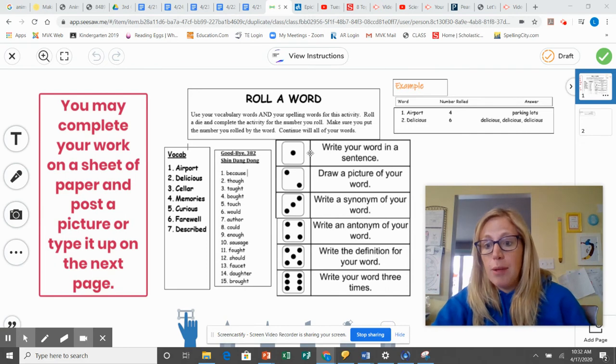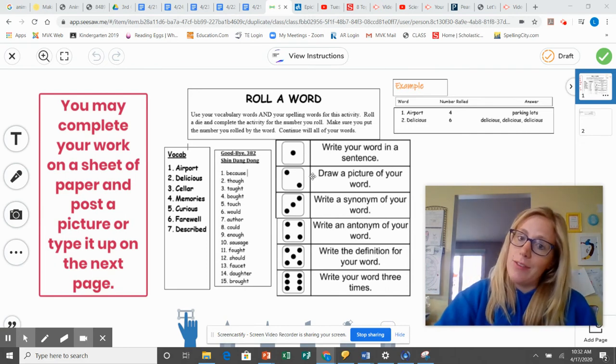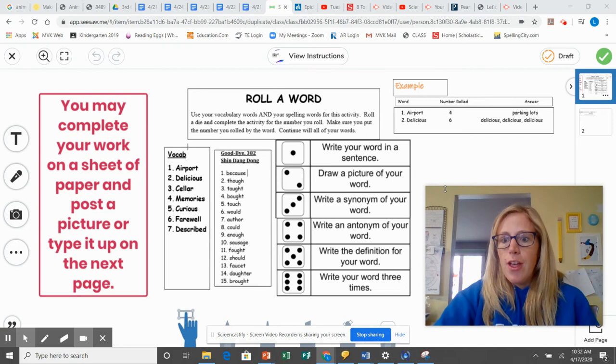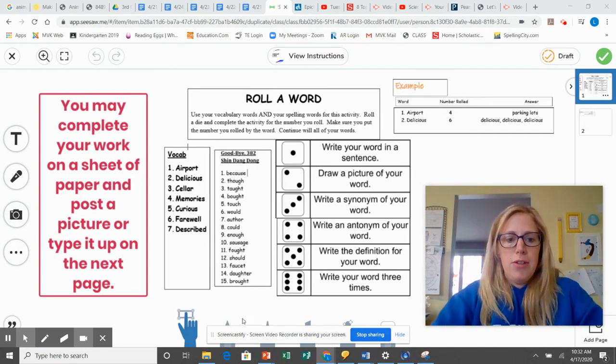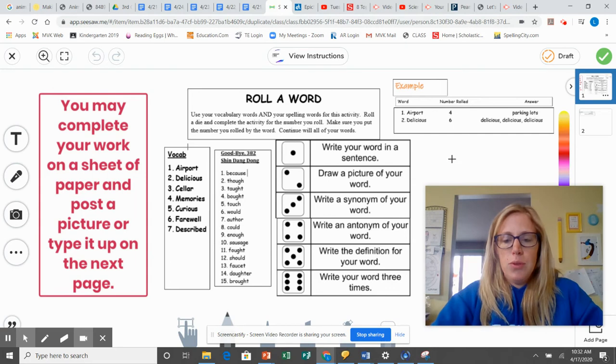You can, if you roll number one, you write it in a sentence. If you roll number two, you draw a picture of your word. Now, if you are on your Seesaw screen, you can always use this little drawing tool to draw it.